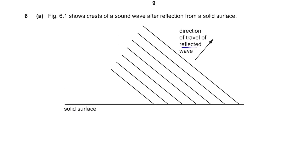These are the reflected wave. We need to draw where the wave initially came from. To do that, you first need to draw a normal. Then, since it's just a reflection, the angle of incidence should equal to the angle of reflection. Since this is the angle of reflection, the angle of incidence should be somewhere over here like this.